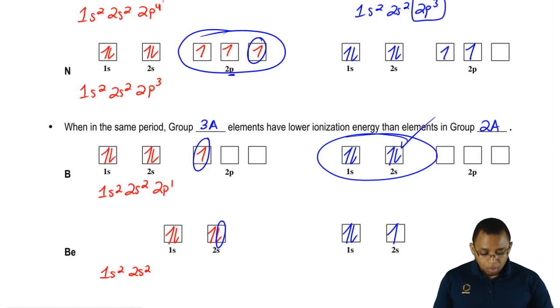By removing an electron, boron actually becomes more favorable. That's why it has a lower ionization energy than beryllium.